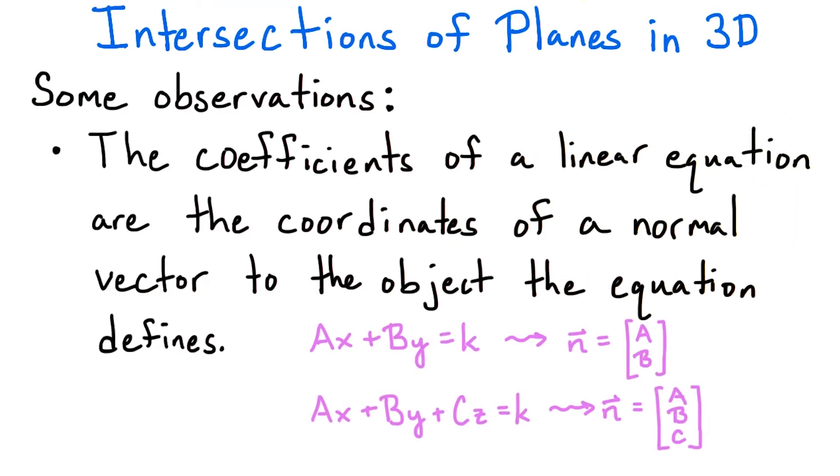Another observation is that the coefficients of the variables in a linear equation give the coordinates for a normal vector to the linear object it defines. So for the line ax plus by equals k, we obtain the normal vector ab, and for the plane ax plus by plus cz equals k, we have a normal vector of abc.